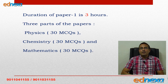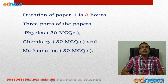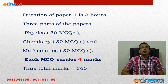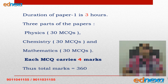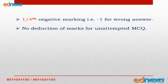Paper one will be for three hours. There will be three parts: physics, chemistry, and mathematics. Each MCQ will carry four marks. If your answer is wrong you will lose one mark — that is one-fourth negative marking. But if you do not attempt an MCQ you will not lose a mark, though you will not get any marks either. Only one option will be correct.